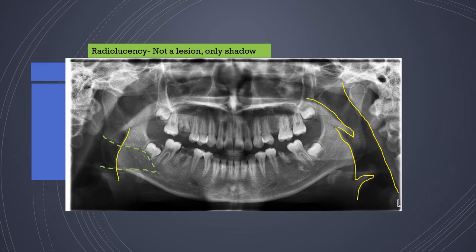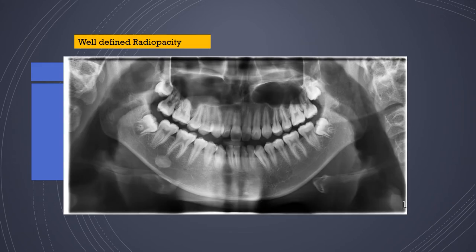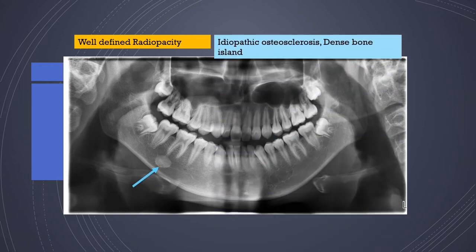Air shadows can be mistaken for pathology. Well-defined radio-opacities, like the one seen here, look benign and harmless — this happens to be idiopathic osteosclerosis, also known as a dense bone island. There is no treatment indicated for this and it is simply left as is.